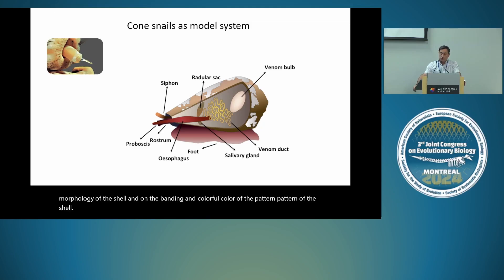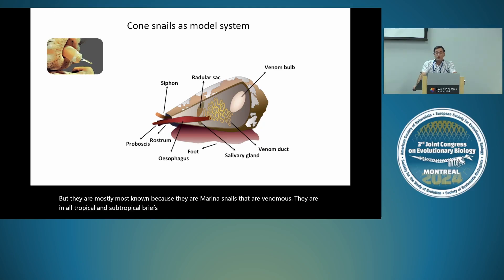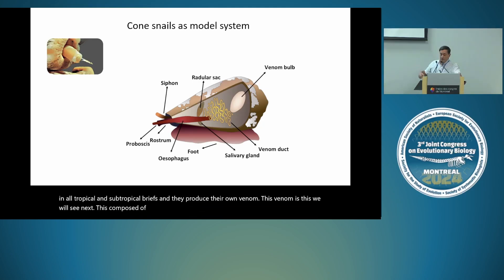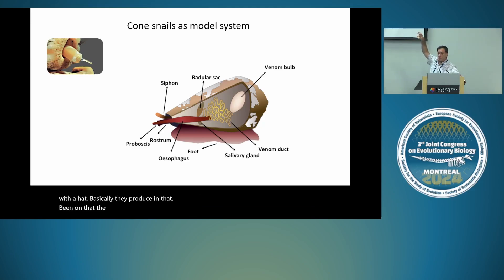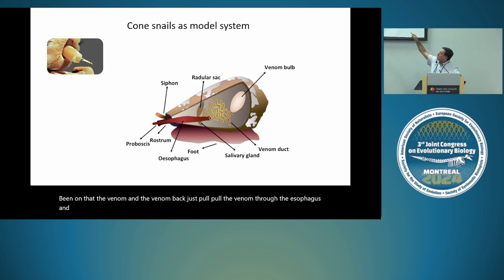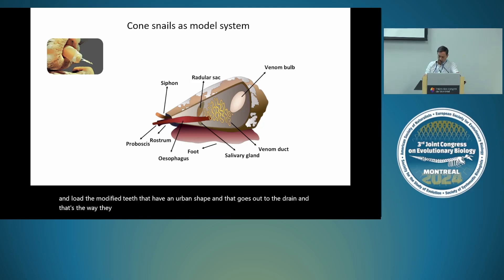They are mostly known because they are marine snails and venomous. They are in all tropical and subtropical reefs and they produce their own venom. This venom is composed of peptides. The venom bulb pulls the venom through the esophagus and loads modified teeth that have a harpoon shape, and that goes out to the prey. That's the way they prey, basically.